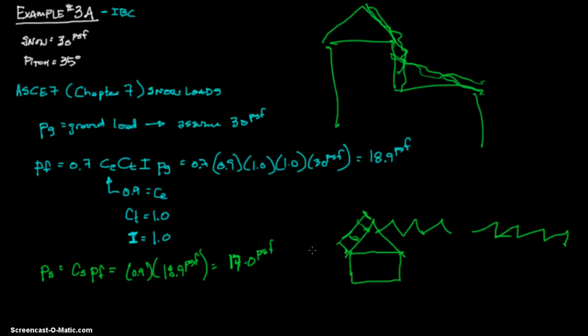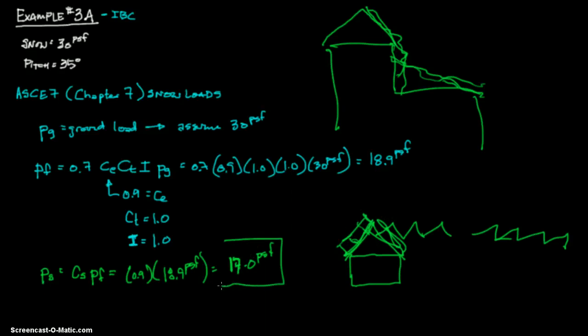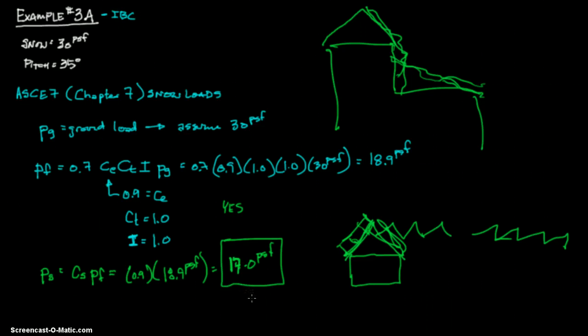But given the simplest terms I can, assuming it's a normal, just straight simple roof, 17.0 PSF is our reduction. So to answer our question, the answer is yes, and our new load is 17.0 PSF. I hope that was a good introduction to the IBC code.